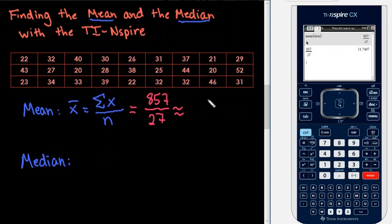And the approximate squiggle is above there. So, we could say that this is 31.7407. So, the mean of these values is 31.7407.